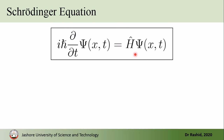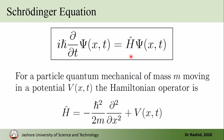Here, H-hat represents the Hamiltonian operator. For a particle of mass m moving in a potential V, the Hamiltonian operator has this form. The first term on the right-hand side represents the kinetic energy operator.